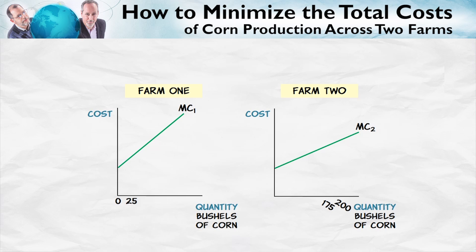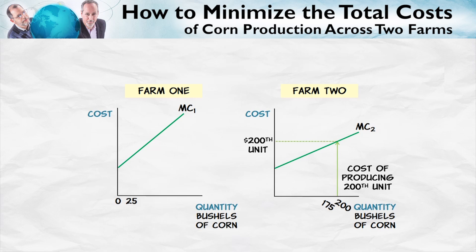To show how the invisible hand minimizes total industry costs, we're going to start with what looks to be a quite different problem. Suppose that you own two farms and you want to produce 200 bushels of corn at the lowest possible cost. How do you do it? By looking at these two marginal cost curves, you might reason that since the cost of producing any quantity of corn is lower on farm two than on farm one, maybe the best thing to do is to produce all 200 units on farm two. I'm going to show you that that's wrong. Let's remember that we can read the cost of producing the nth unit of corn as the height of the marginal cost curve for that unit.